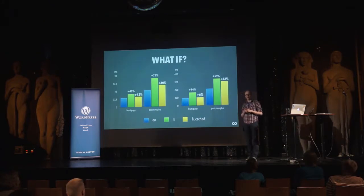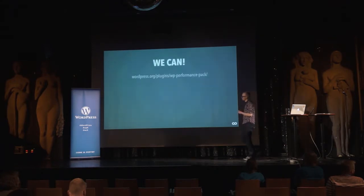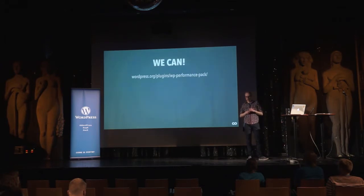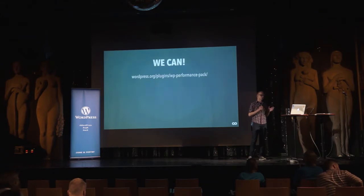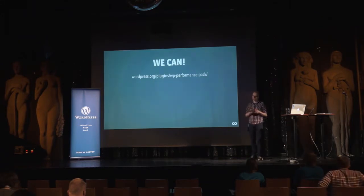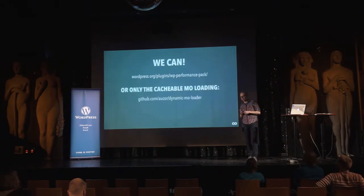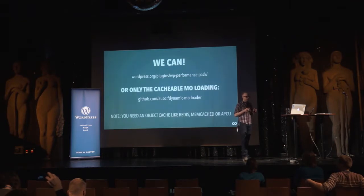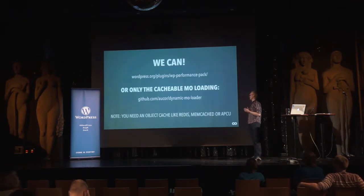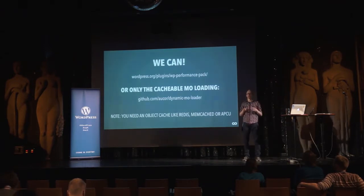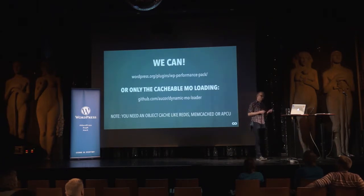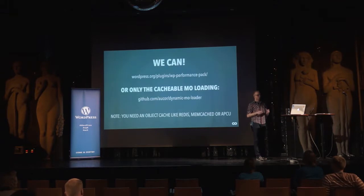We've been running these kinds of optimizations for a few years now, and on average we've seen something like 50 to 20% improvement in page generation times. So, how to do this? There is a plugin called WP Performance Pack that has these text domain optimization features and a few other things. If you don't want the other things — like we don't — we have made only the cacheable text domain loading available on our GitHub account. To actually get the real performance improvement, you need an object cache backend like Redis, Memcached, or APCu. But any of these can deliver quite the same performance.